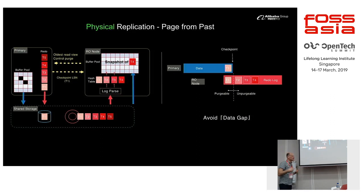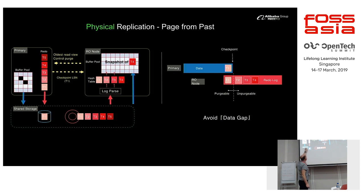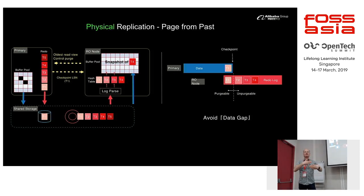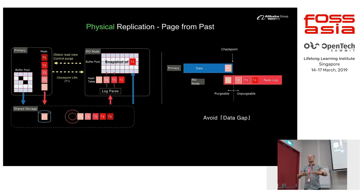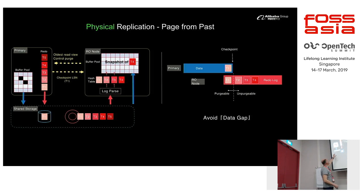We need a way to garbage collect unapplied redo log on the replica. The primary sends the checkpoint LSN — the log sequence number up to which all pages have been flushed to disk. The primary then communicates this checkpoint to all replicas so they can garbage collect the old redo log.